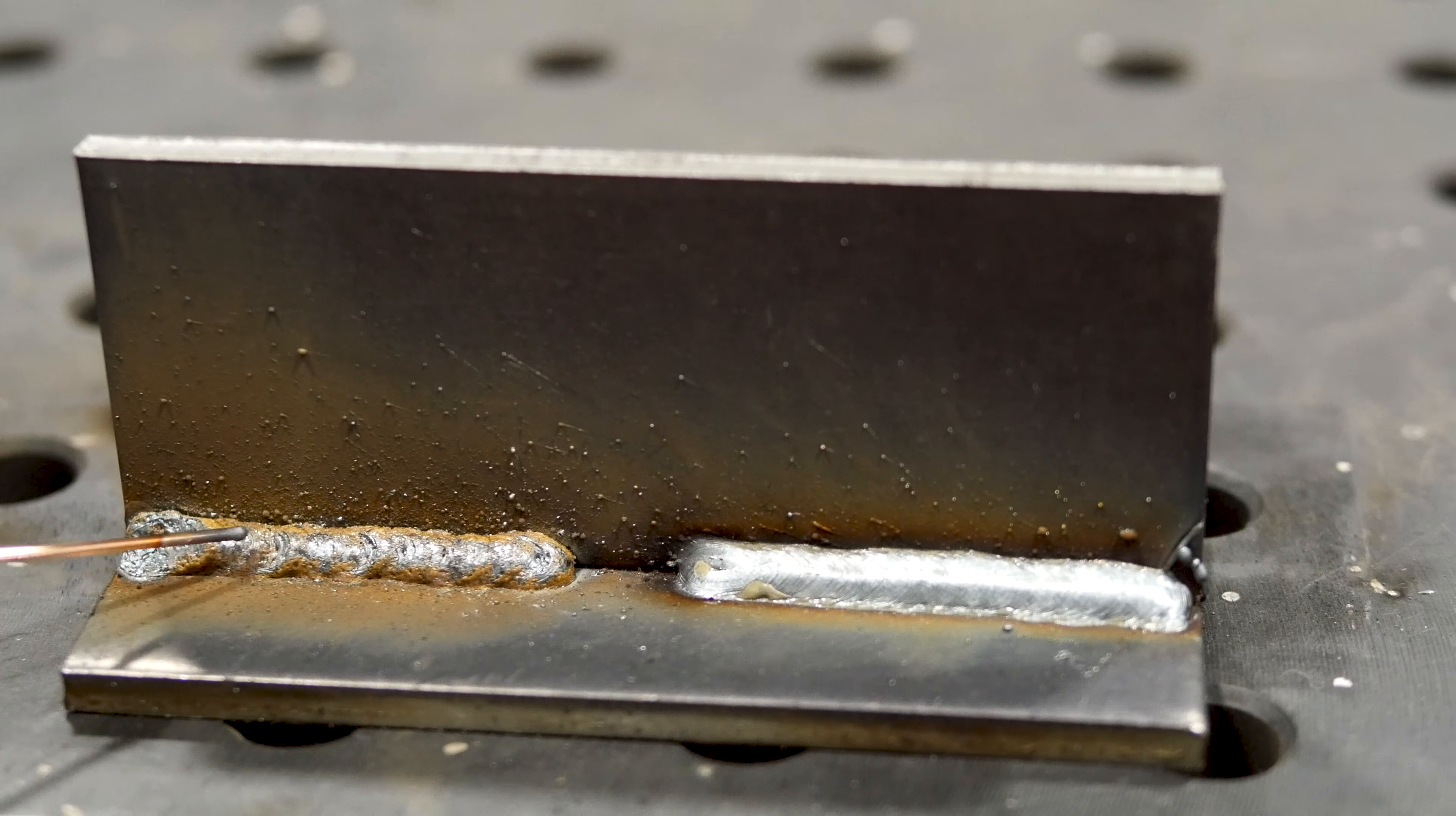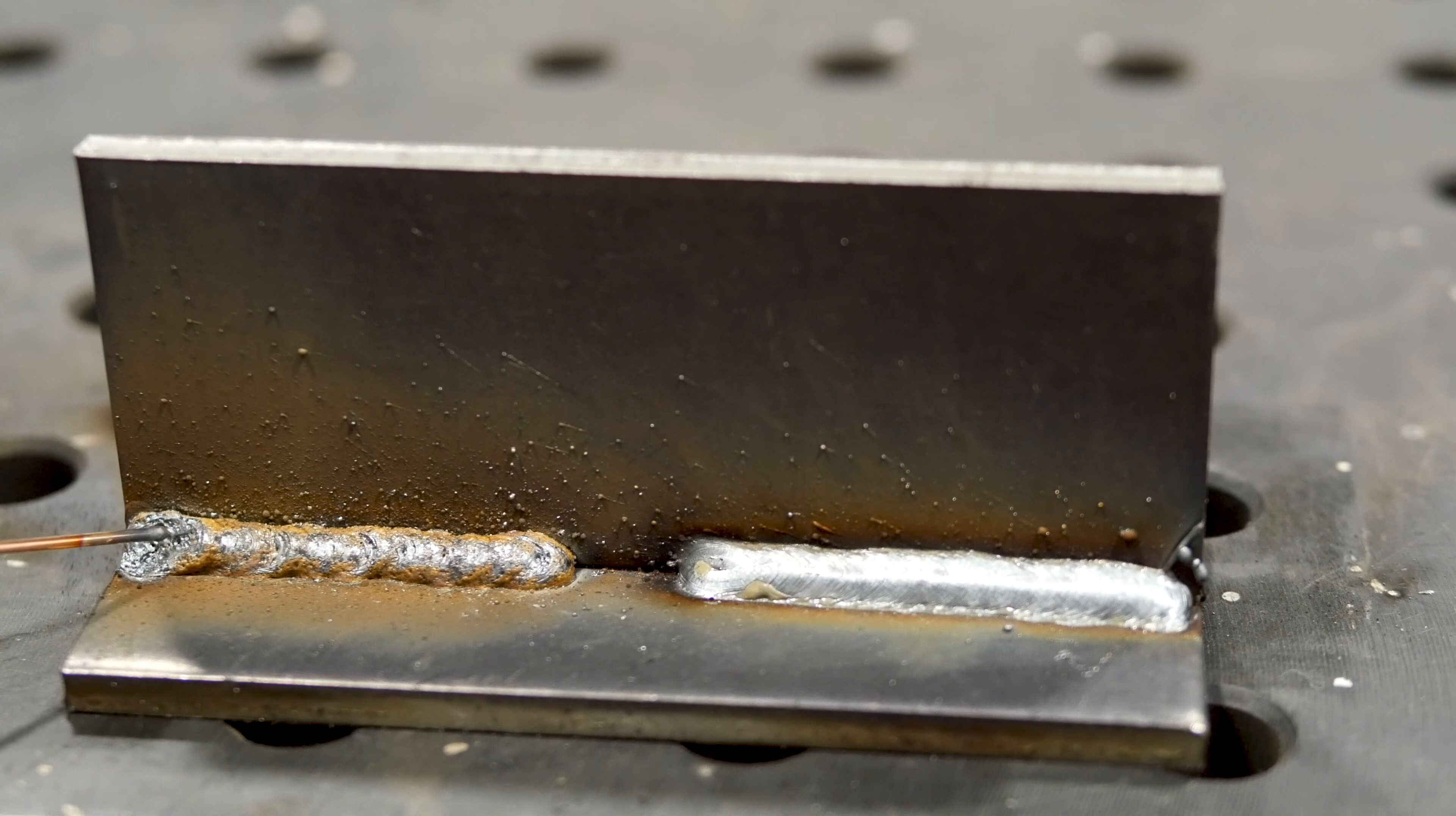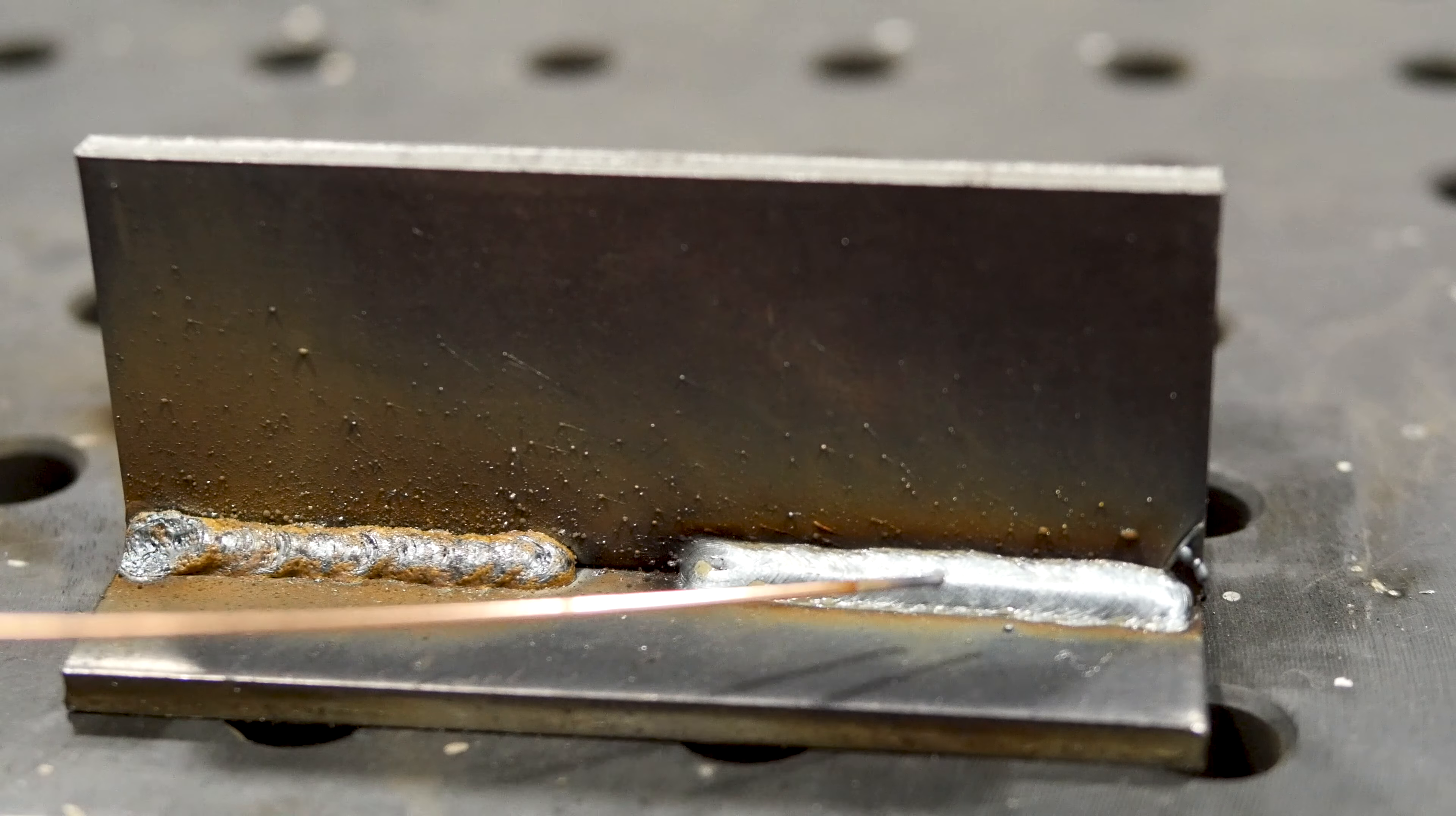This is due to inadequate gas coverage. The nitrogen that's in the air diffuses with the molten weld metal and causes your weld to look like Swiss cheese. This weld is dramatically less strong than this weld.